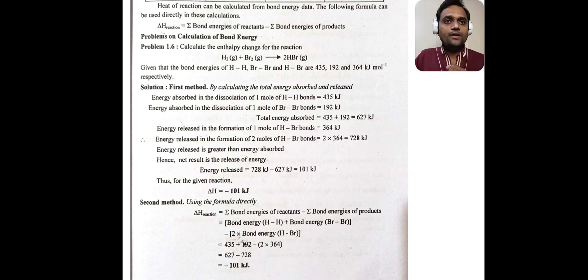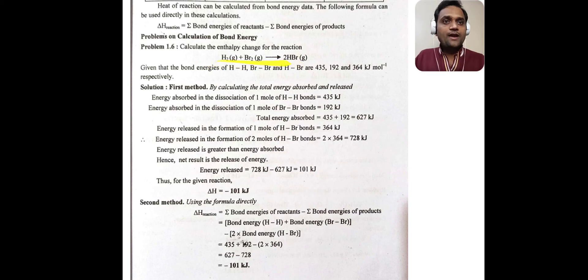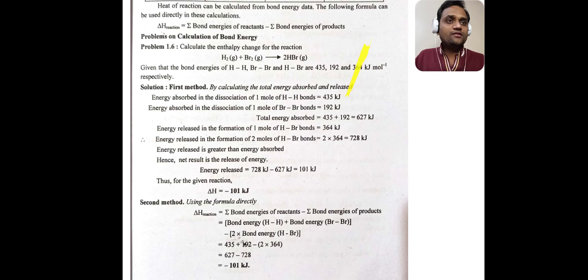We will see one problem based on calculation of bond energy. Calculate the enthalpy change for the reaction: H2 gas plus Br2 gas forms two moles of HBr gas. Given that bond energies are: H-H bond = 435 kJ/mol, Br-Br bond = 192 kJ/mol, and H-Br bond = 364 kJ/mol.